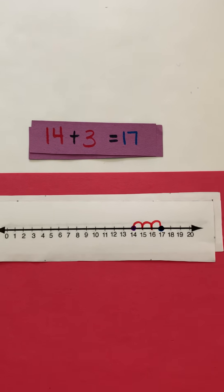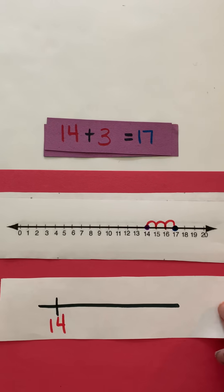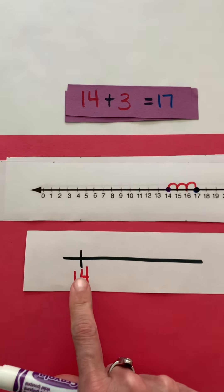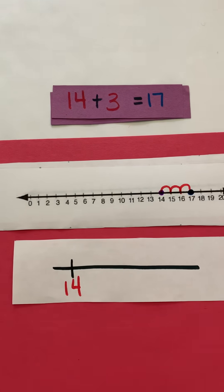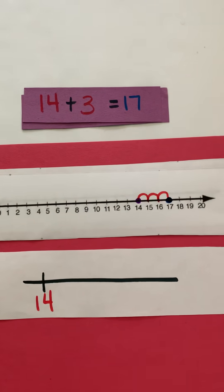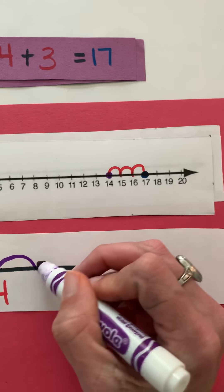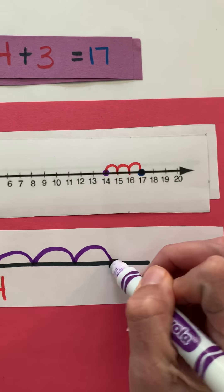Now I want to show you what you can do if you have an open number line. What I did is I drew a line and I put a little mark to represent 14. So what I want to do now is I want to add three ones. So I'm going to jump one, two, three.